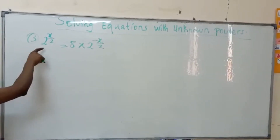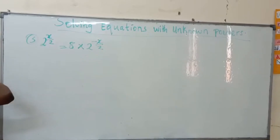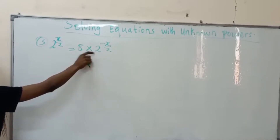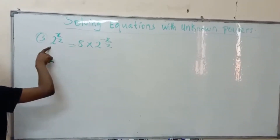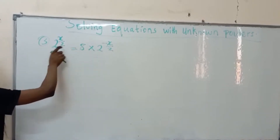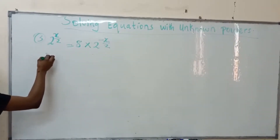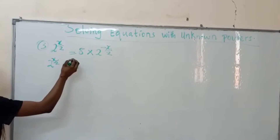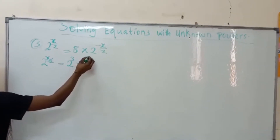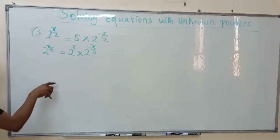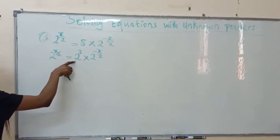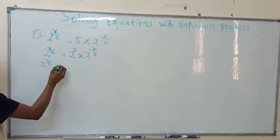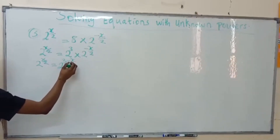Number 3. Here we have a fraction — a negative fraction. We have to make the left hand side equal to the right hand side. The lowest base is 2, so we make everything have base 2. We have 2^(x/2) equals 2 base 3 gives 8, times 2^(−x/2). Adding the powers because bases are the same, we have 2^(x/2) equals 2^(3 − x/2).